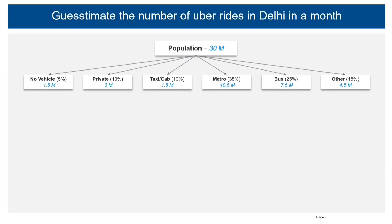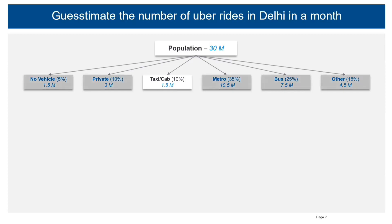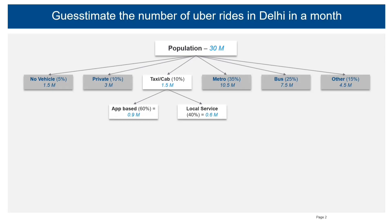Since our problem statement is about the number of rides, we are going to ignore the other modes of transport and only concentrate on the taxi or cab service. In the next step, I'm going to divide the taxi and cab service population into two groups: people using app-based service and people using local service.